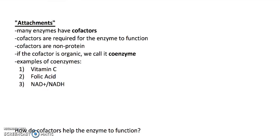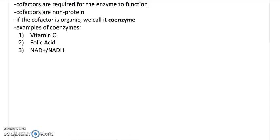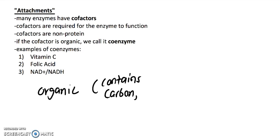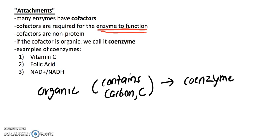So some attachments that proteins have are called cofactors, and we have two types: organic and inorganic. And all that definition means is if your cofactor is organic, this means it contains carbon, which is the letter C on your periodic table. And if it does so, we call it a coenzyme. But it's still an attachment to the protein and it is required for the protein to function. Yes, they're absolutely necessary - enzymes will not work without their cofactors.